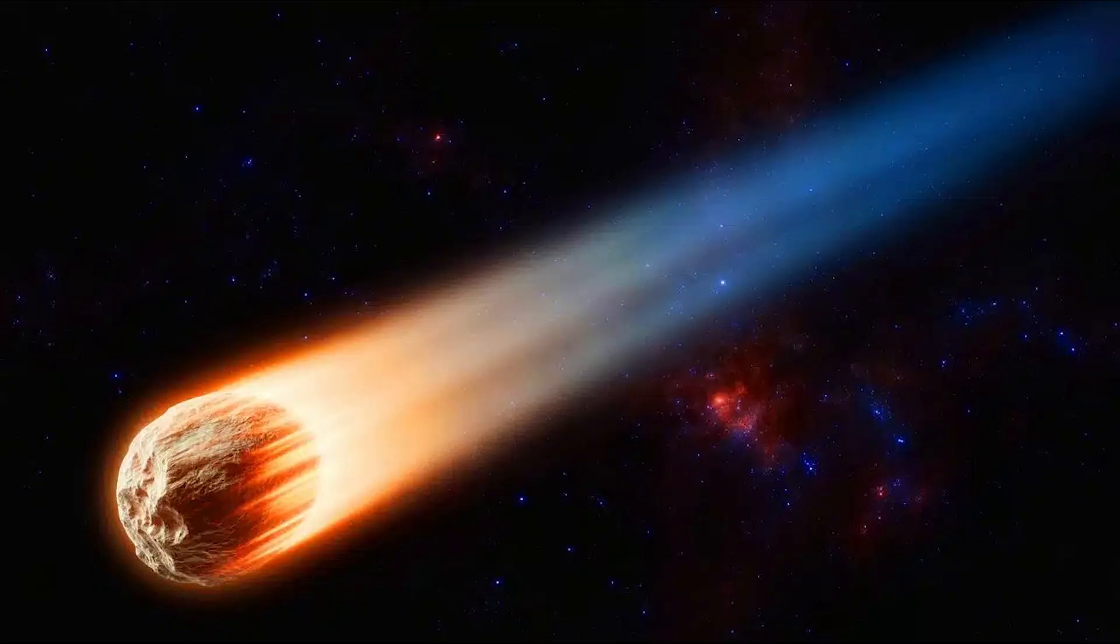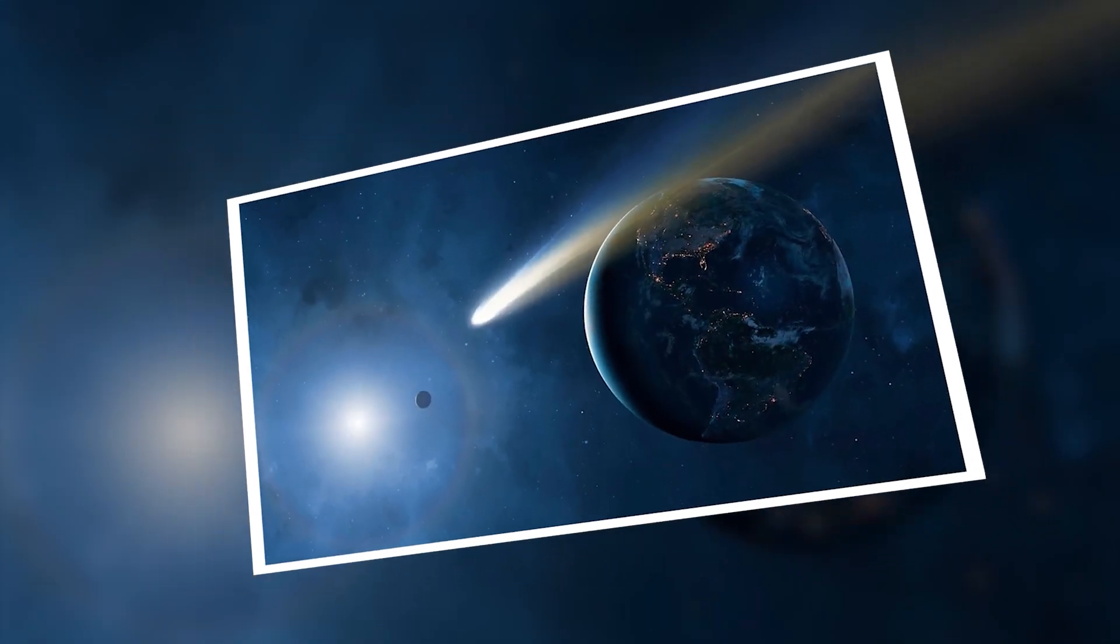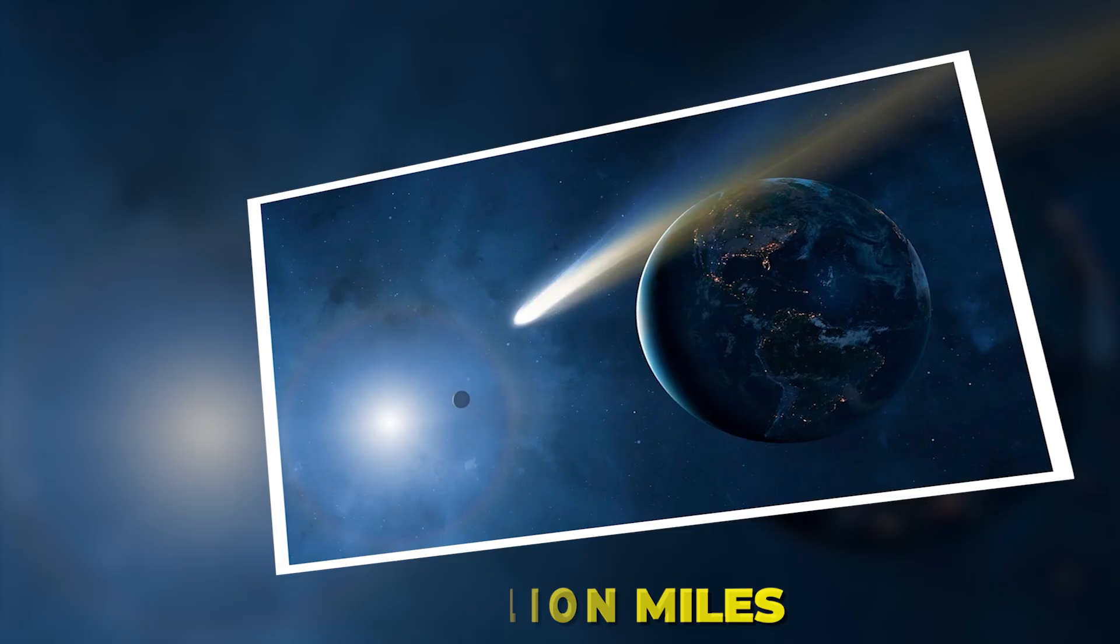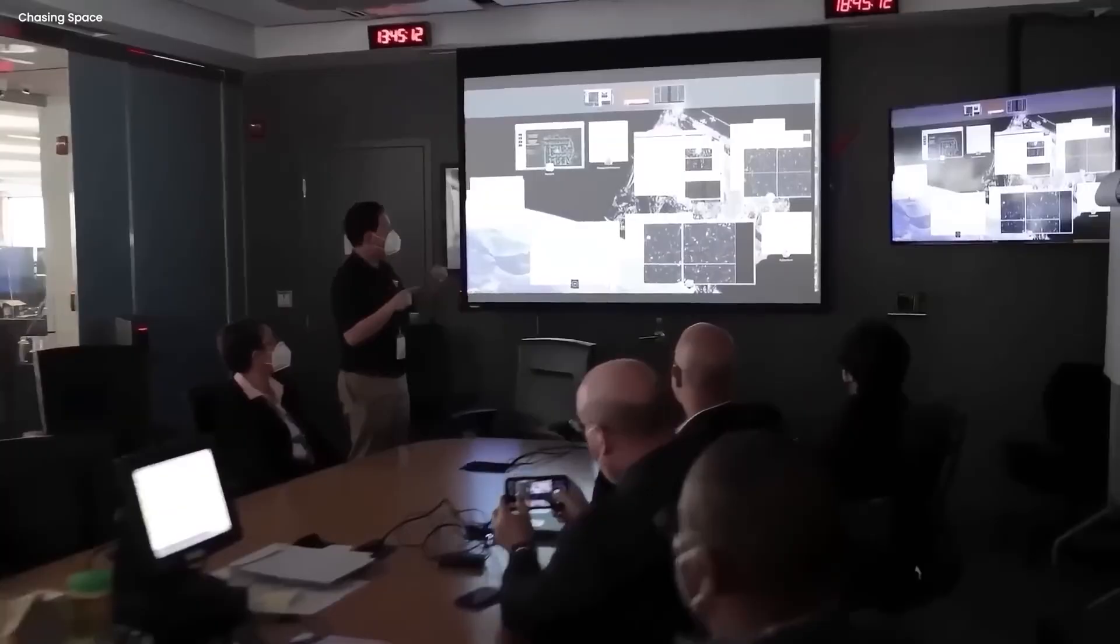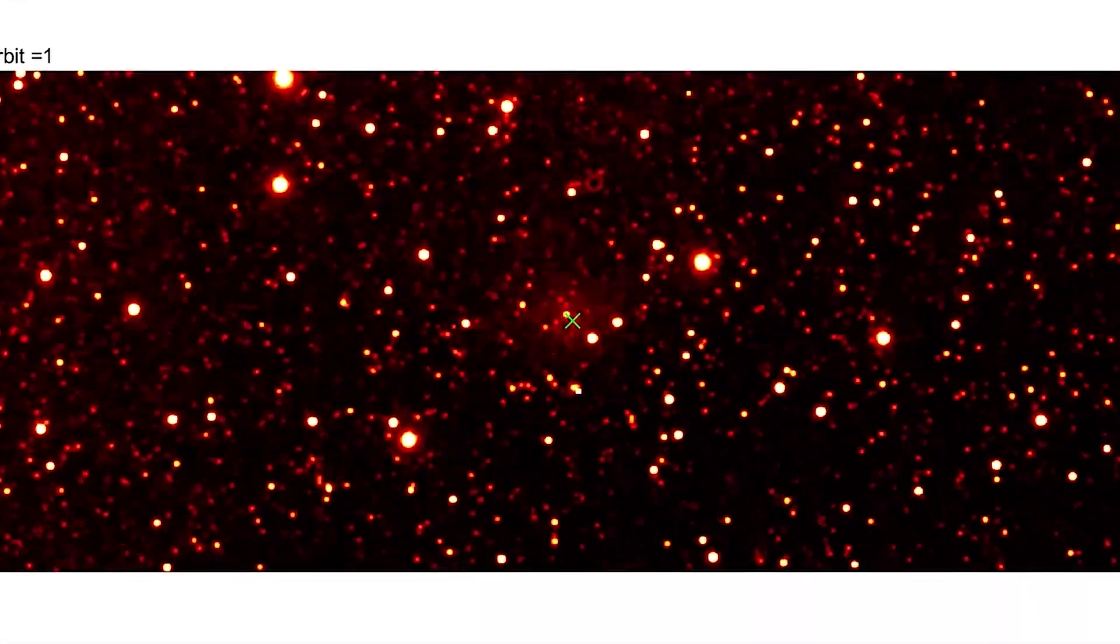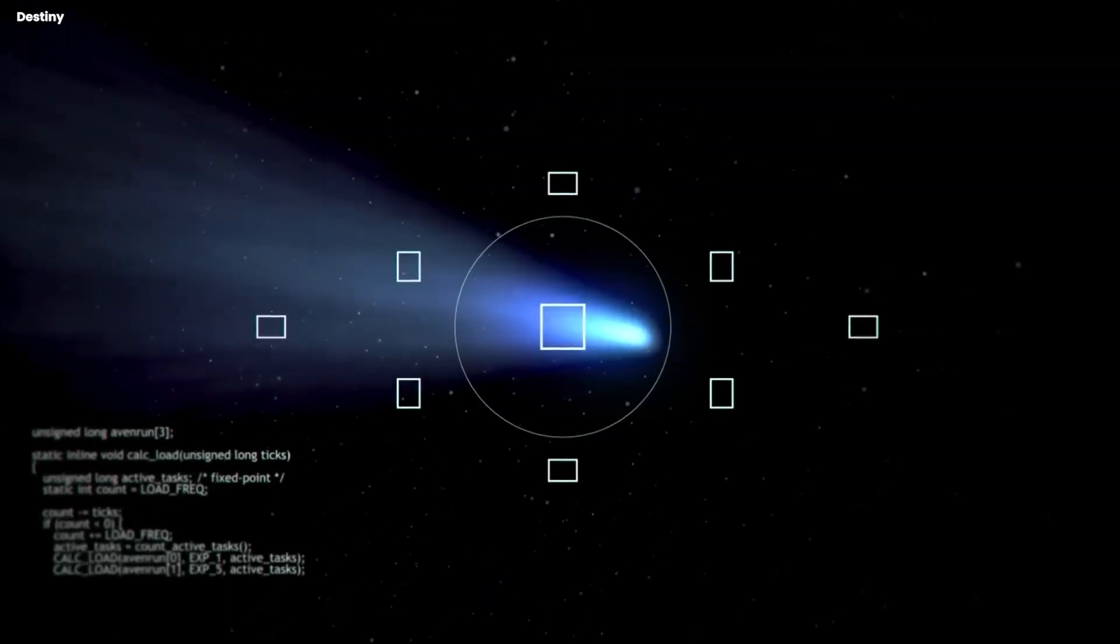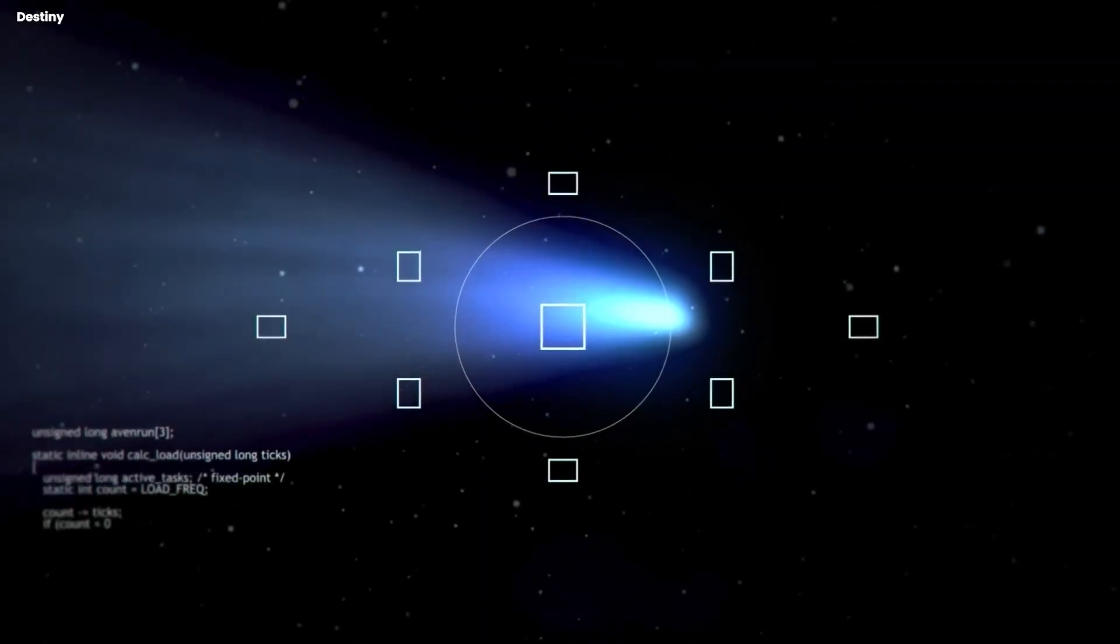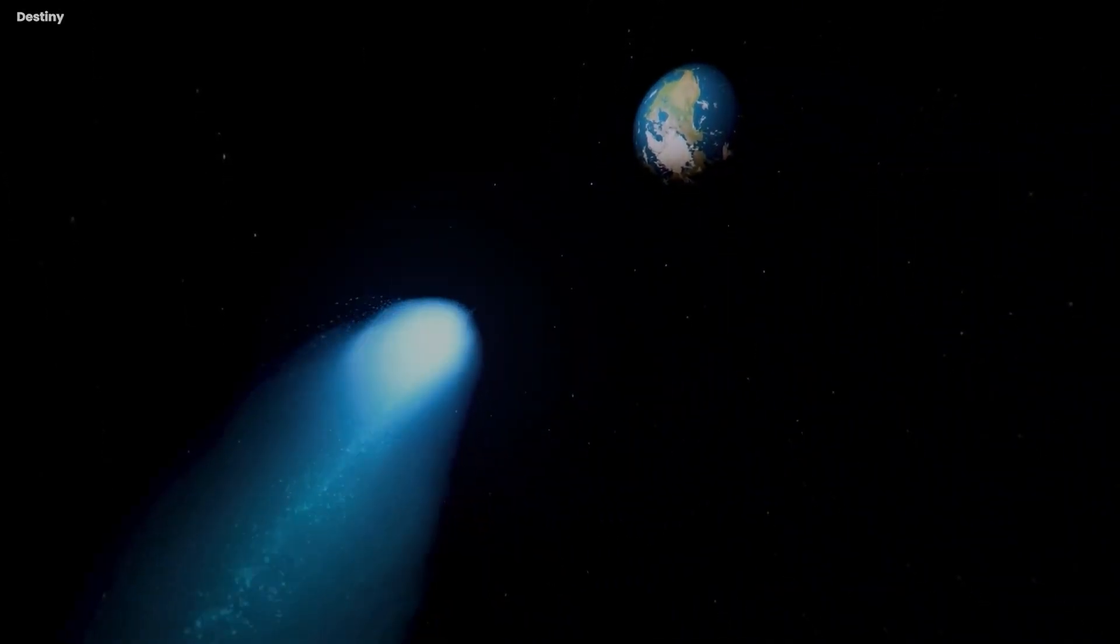And then 3I Atlas made its closest pass to Earth on December 19th at a distance of about 170 million miles, and Loeb was watching very carefully to see what it would do. And now, just hours after the flyby, he's changed his position. He's saying it's most likely natural, not definitely natural but most likely. And that's a pretty big reversal from a guy who's been documenting 15 separate anomalies that he claims have astronomically low probabilities of occurring naturally. So what did he see during that Earth flyby that made him change his mind?